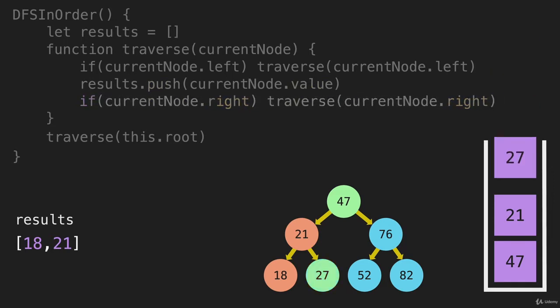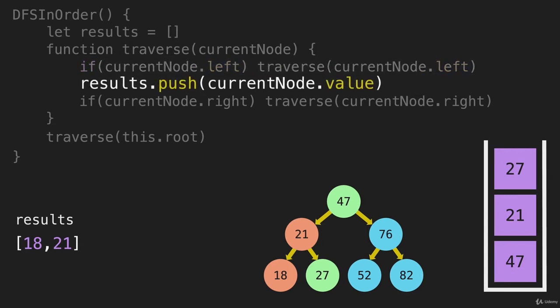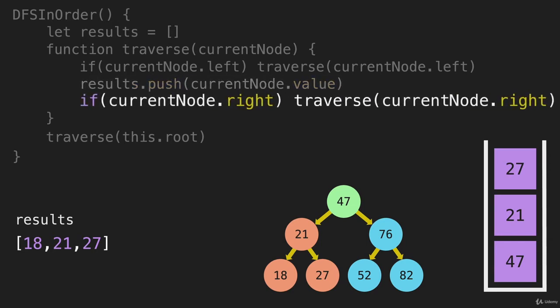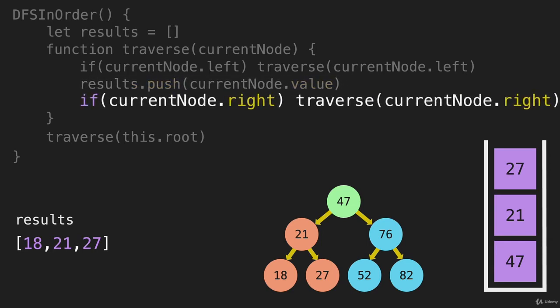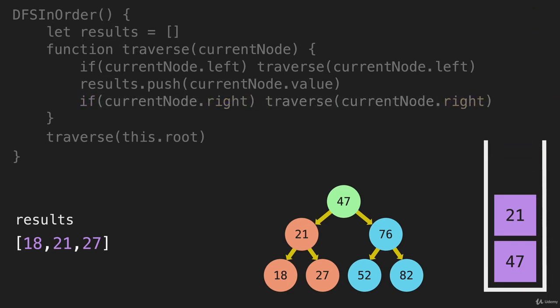We push that value into the array and then go right, which pushes 27 onto the stack. It's going to try to go left, and we write that value into the array. It will try to go right — there's nothing there. Now 27 is done, we pop that from the stack. The 21 is at the top of the call stack — it's already gone left, written its value, and gone right. Now we can pop that from the stack.